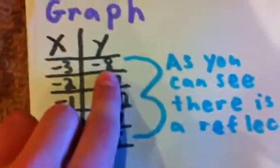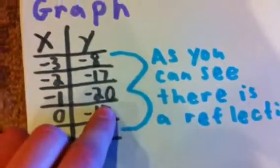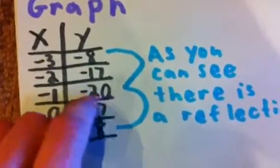See, 8 reflects with this negative 8, and negative 17 reflects with this negative 17. And as you can see, this is the vertex.